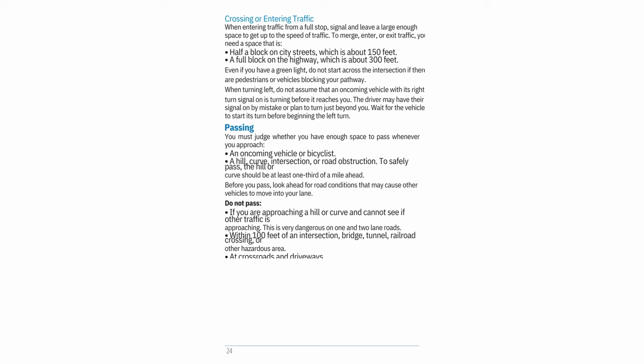Even if you have a green light, do not start across the intersection if there are pedestrians or vehicles blocking your pathway. When turning left, do not assume that an oncoming vehicle with its right turn signal on is turning before it reaches you — the driver may have the signal on by mistake or plan to turn just beyond you. Wait for the vehicle to start its turn before beginning your left turn.